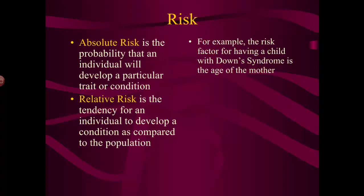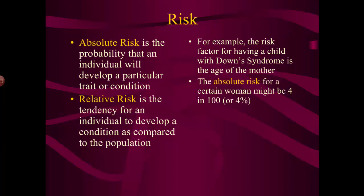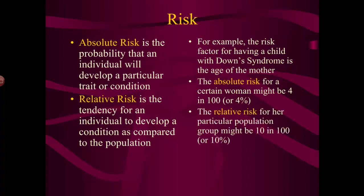For example, you might have a woman who has an absolute risk of having a child with Down syndrome — her age gives her a risk of 4%, or 4 in 100. But let's say she belongs to a population where women have a much higher tendency than the general population to have children with Down syndrome — say their relative risk is 10%, or 1 in 10. This woman's overall risk, therefore, is 40% — her absolute risk multiplied by her relative risk — meaning she's got a 40% chance, not a 4% chance, because the population affects things.